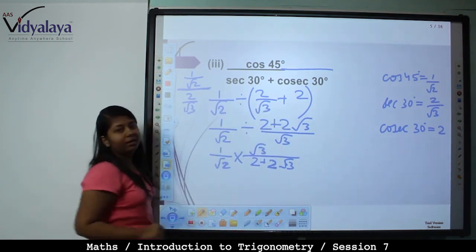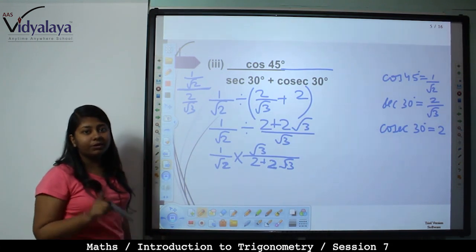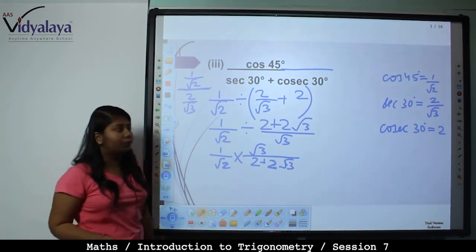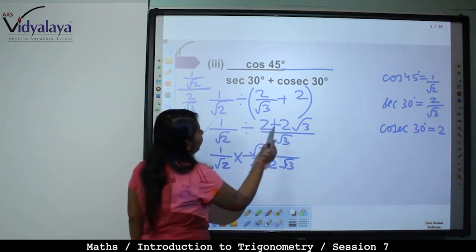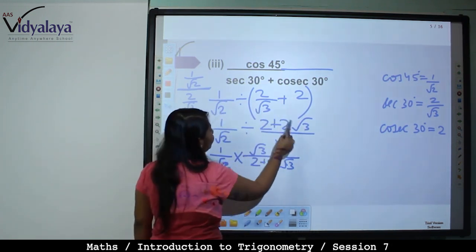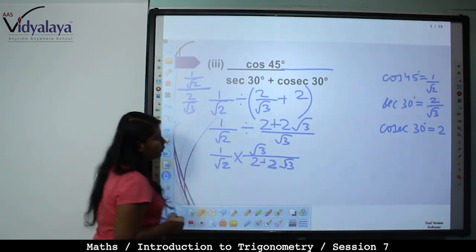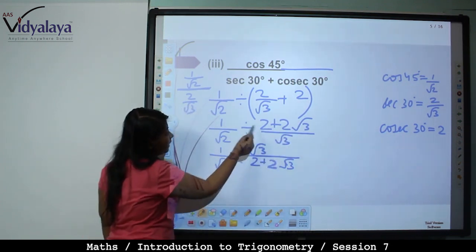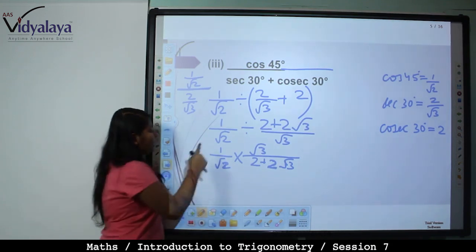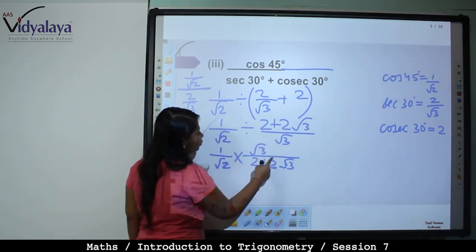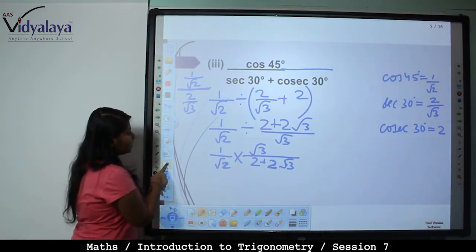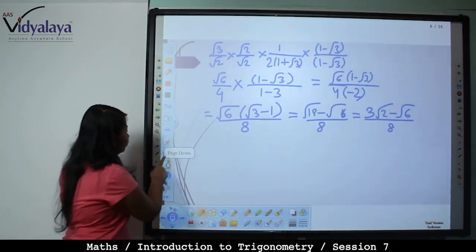So 1 by root 2 divided by — take the LCM, root 3 comes down, giving 2 plus 2 root 3 by root 3. Now change the division to multiplication: 1 by root 2 multiplied by root 3 upon (2 plus 2 root 3). This gives root 3 by root 2.